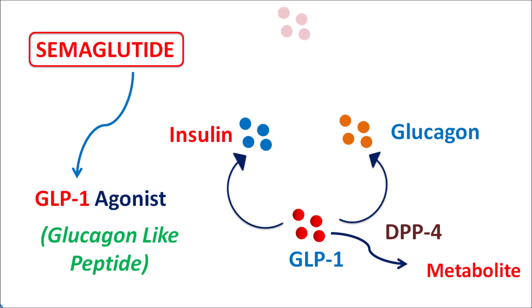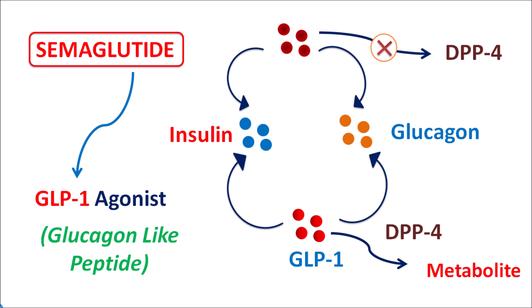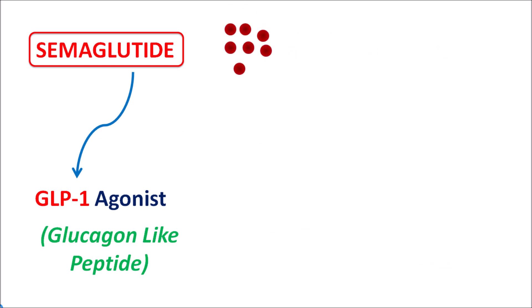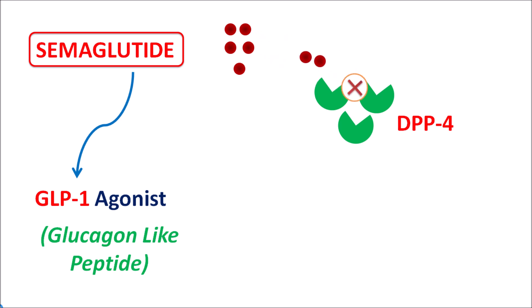Semaglutide is a GLP-1 receptor agonist that acts just like GLP-1 — it increases insulin secretion as well as glucagon action. Importantly, this drug is not metabolized by the DPP-4 enzyme, which is why it is long-acting and can control excessive glucose levels in diabetic patients. This resistance to DPP-4 metabolism increases the bioavailability of the drug.